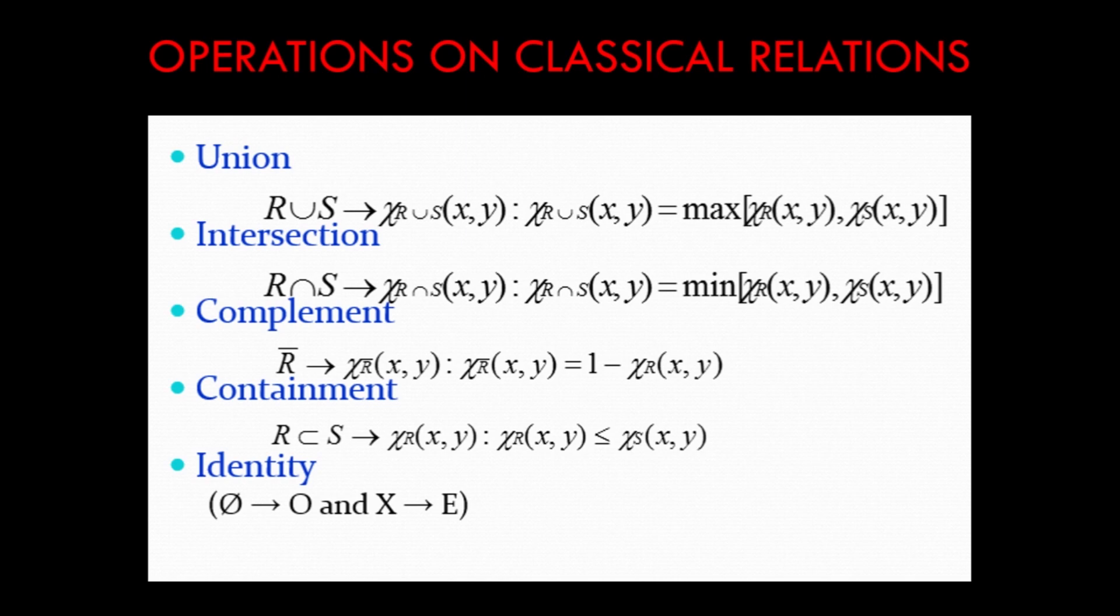So here are some operations on classical relations. This is just the theoretical aspect and I will show you the brief formulas. We can perform union on two relations R∪S and it is denoted by max[χR(x,y), χS(x,y)]. Then we have intersection which is minimum of the two elements.